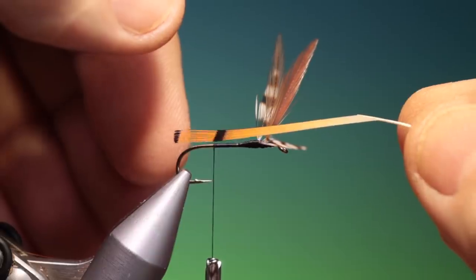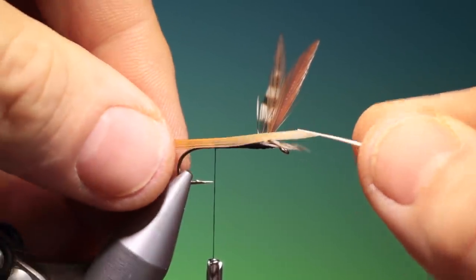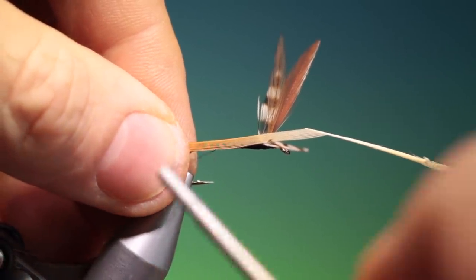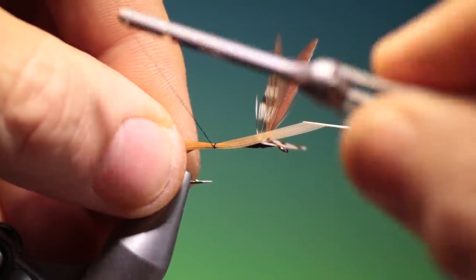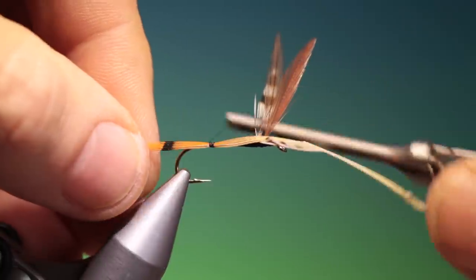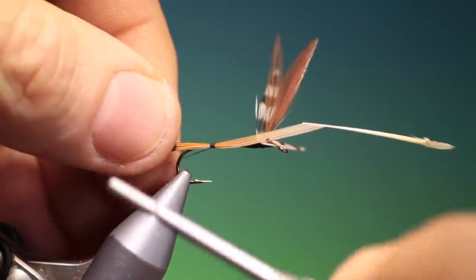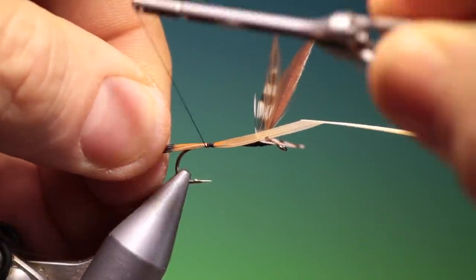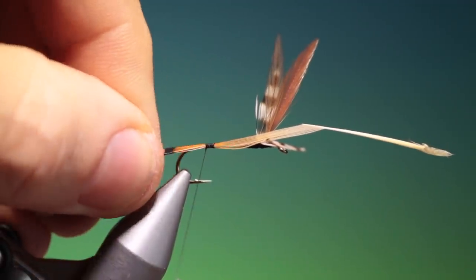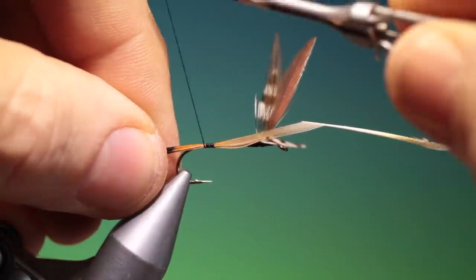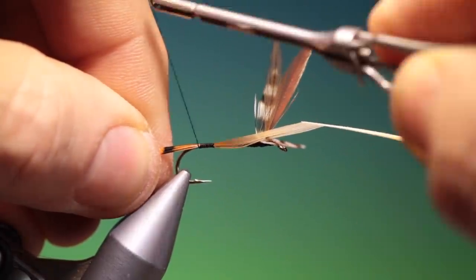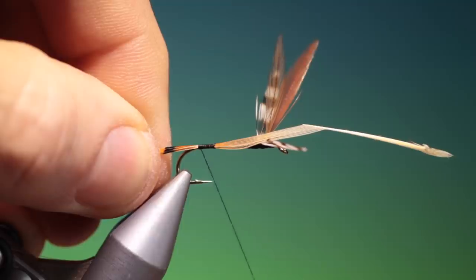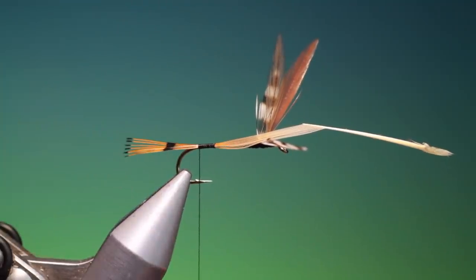So this wants to be about the same length as the hook shank again. We'll just tack these in to start with, just to see that they're in the correct position. That's looking good. We'll just go back with this to there. Very nice.